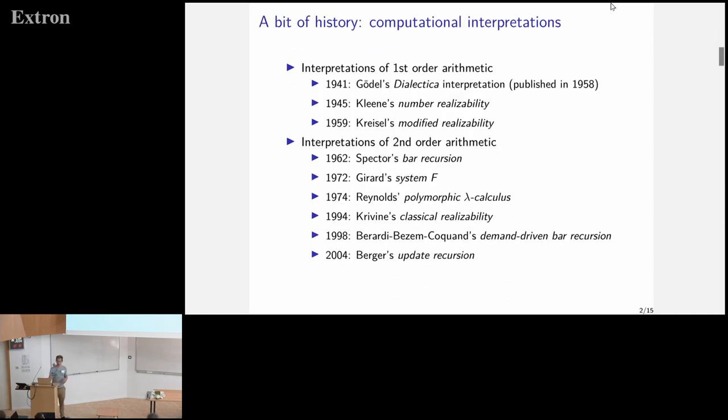A bit of history about computational interpretation. The first computational interpretations were for first-order arithmetic. There was Gödel's Dialectica interpretation in the beginning of the 40s, published much later. Then came Kleene's number realizability, which is kind of taking only one part of Dialectica and putting this into the whole world of recursive functions. And then Kreisel's modified realizability, where instead of taking all recursive functions, you only take functions which are well typed in some system.